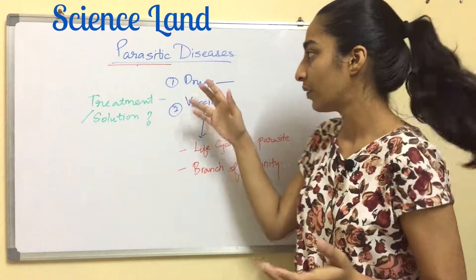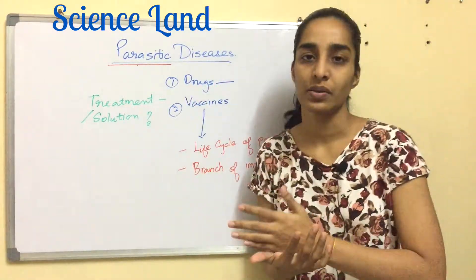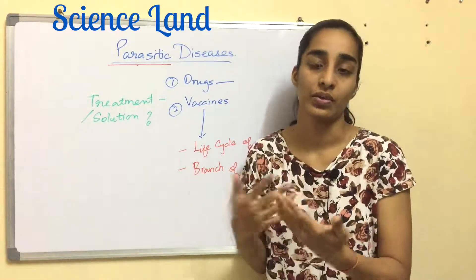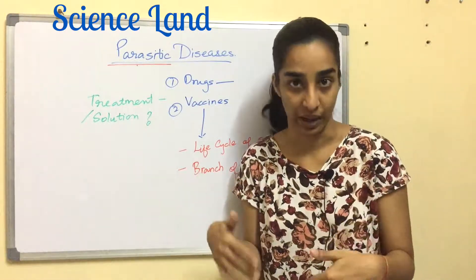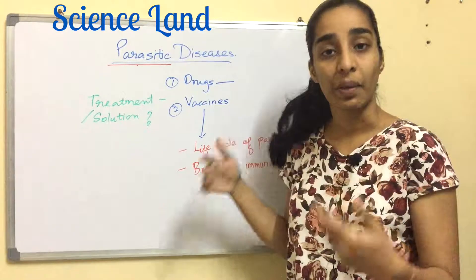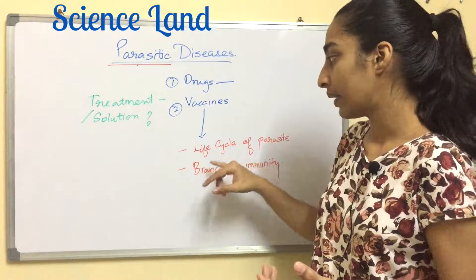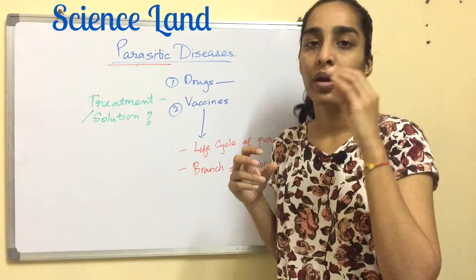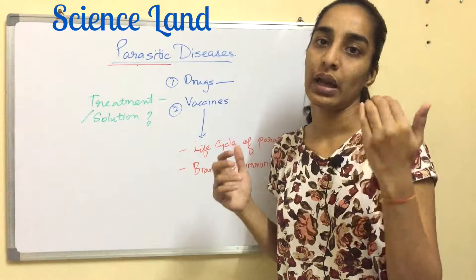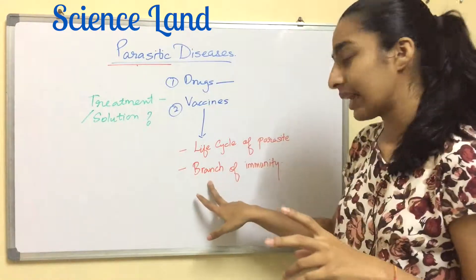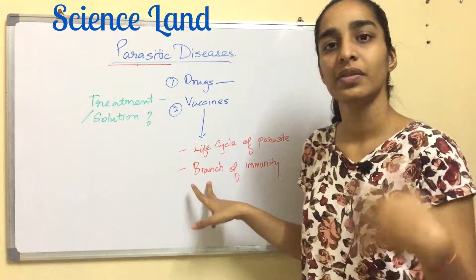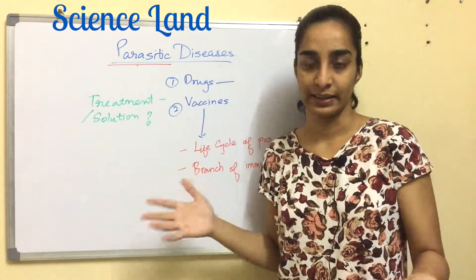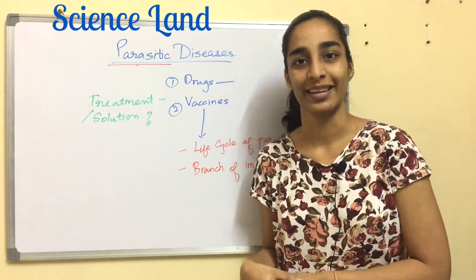What is the treatment of these parasitic diseases? The first is drugs, but drugs always have the drawback of multi-drug resistance, and newer drugs also take a lot of time to develop. The second is vaccines. Vaccine development also requires studying two main things: the life cycle of the parasite — at what stage you can target the vaccine — and the branch of immunity which gives protection to an individual. This is the introduction to parasitic diseases. Thank you so much for watching; do subscribe to my channel.